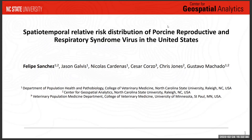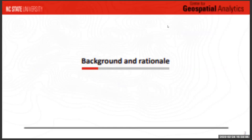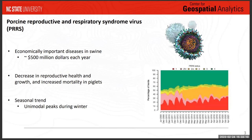My name is Felipe Sanchez. I'm a second-year PhD student at CGA, advised by Gustavo Machado and Dr. Jones. This work is related to my chapter one on spatiotemporal relative risk distribution of porcine reproductive and respiratory syndrome virus. Porcine reproductive and respiratory syndrome virus — which I'll be referring to as PRRS — is one of the most economically important diseases in the United States, with approximately $500 million in losses in production every year due to decreases in reproductive health, growth, and increased mortality in piglets.